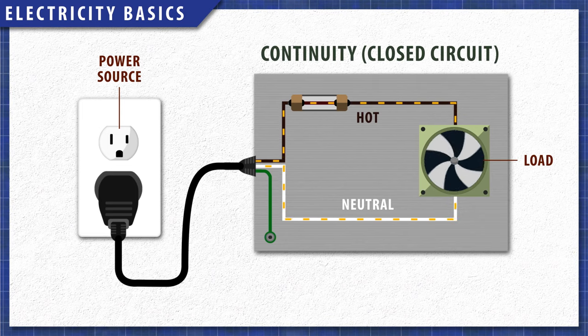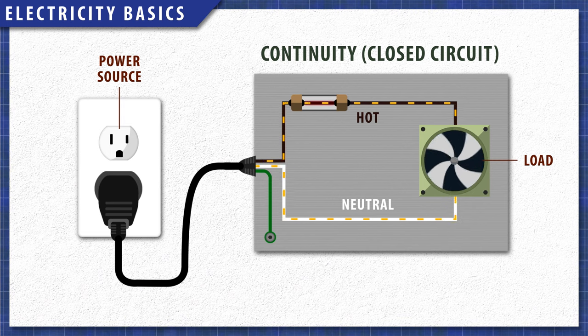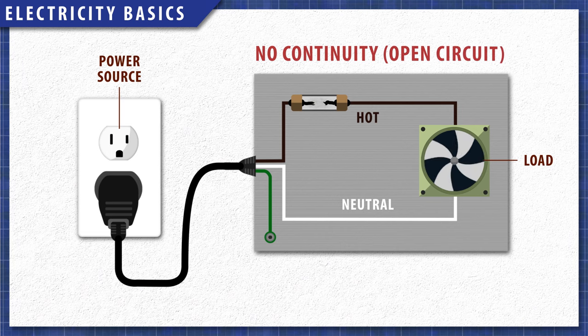All circuits need a continuous path for electricity to flow through. This is continuity, or a closed circuit. When a component fails, it creates an open circuit as there is no continuity. The appliance will not work properly until that component is replaced.